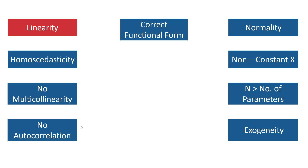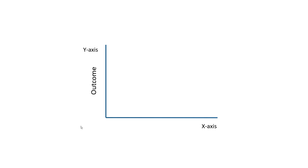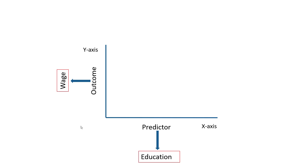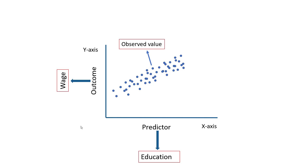Let's dive deeper into the linearity assumption. On the y-axis we have our dependent variable or the outcome variable, which in this case is wage. On the x-axis we have our independent variable or the predictor variable, which in this case is education. For the sake of simplicity we are just assuming one predictor variable, but the same idea can be extended for more than one predictor variable. We have a bunch of observed values and a fitted line. This line represents that there is a linear relationship between education and wage — by linear we mean that the relationship is represented by a straight line.